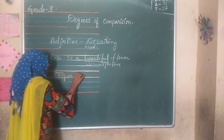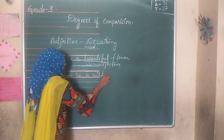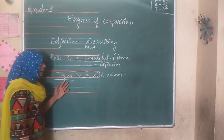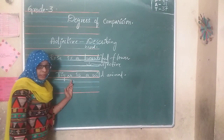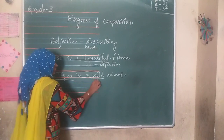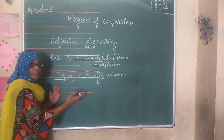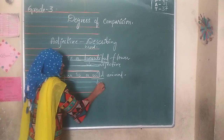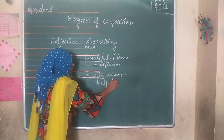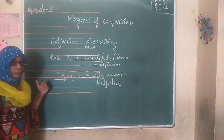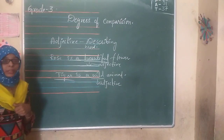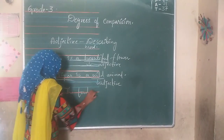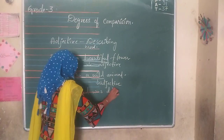Another example: 'Tiger is a wild animal.' Here we are talking about tiger — tiger is the noun. The word 'wild' is saying something about tiger and giving additional information about this tiger. So 'wild' is the adjective here because wild is describing tiger. This type of describing word is called an adjective.